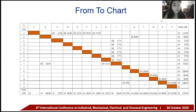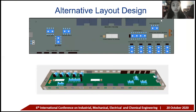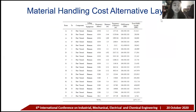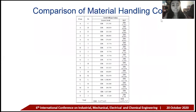The next step presents the from-to chart. This is the alternative layout design of the company. For the material handling cost of the alternative layout, the total material handling cost per month is 2 million and 971 rupiah. In the comparison of material handling costs, the total material handling cost per month for the initial layout is 5 million rupiah, and after the SLP method redesign of the facility layout it is 2 million and 900 rupiah.